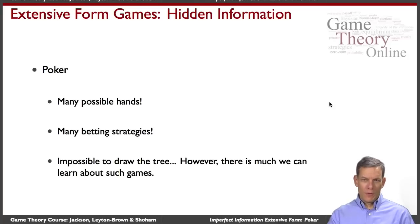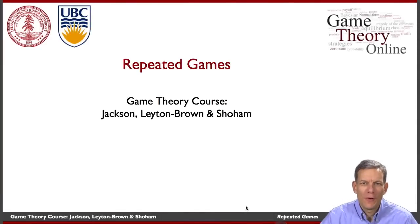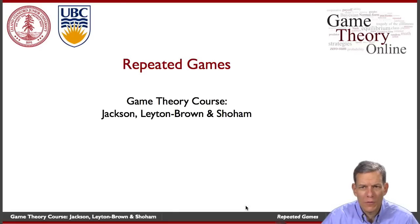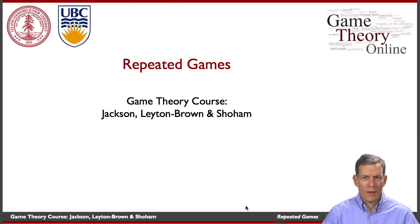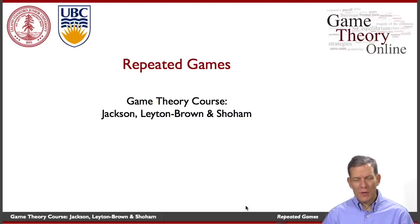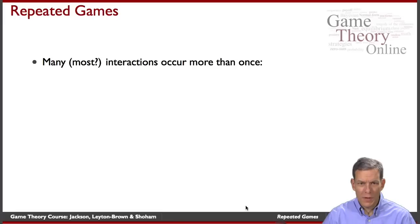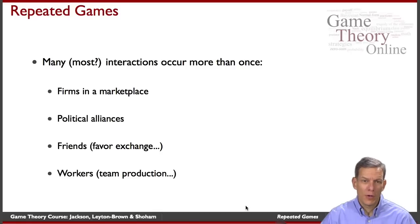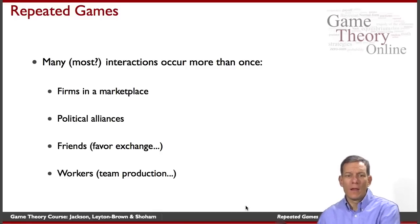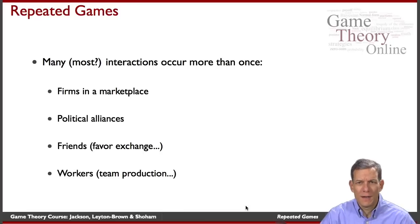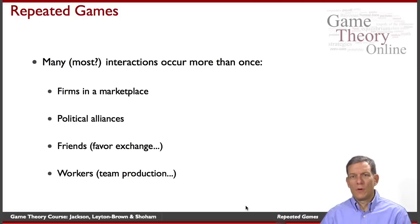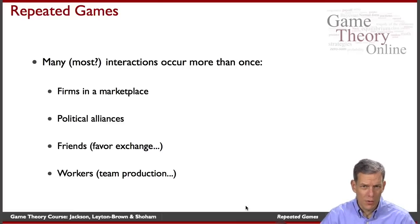It's time to start into a new topic: repeated games. This will use some of the reasoning we've had in terms of subgame perfection in extensive forms, but now think of situations where players are playing a game repeatedly over time. When we think of most interactions in the world, there's a lot of them which occur more than once — firms in a marketplace interacting with their competitors day after day, political alliances, countries deciding how they should negotiate with other ones, whether they should have conflicts, and so forth.